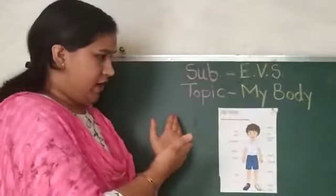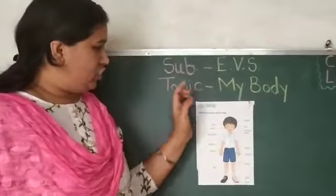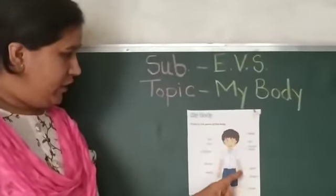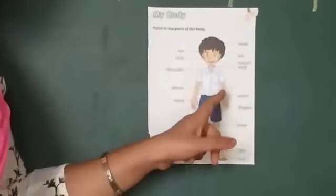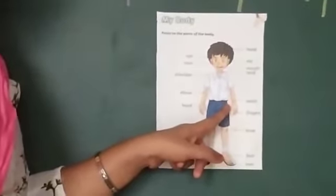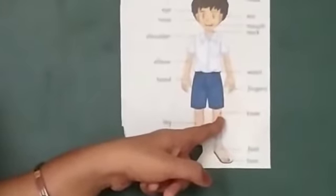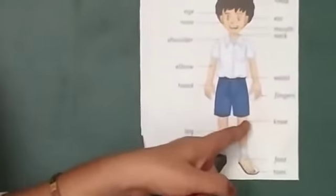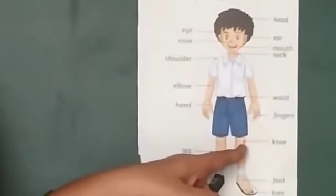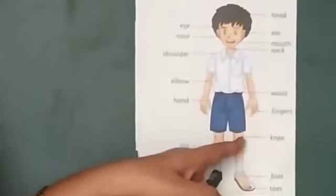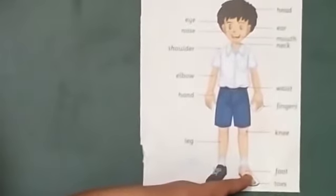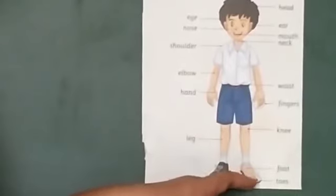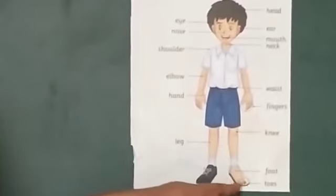Now look at the chart. Can you see the chart? What is this? Waist — this is waist. This is knee. We can move our leg forward with the help of the knee. This is foot. And these are toes.